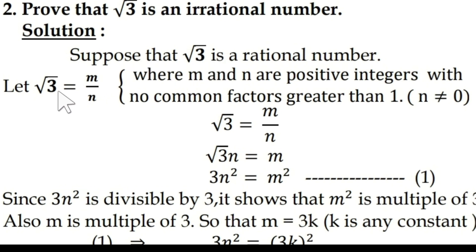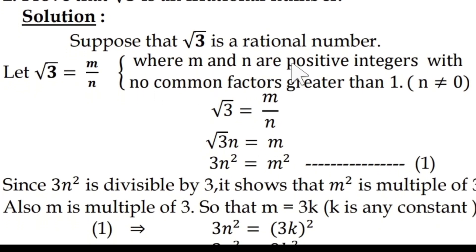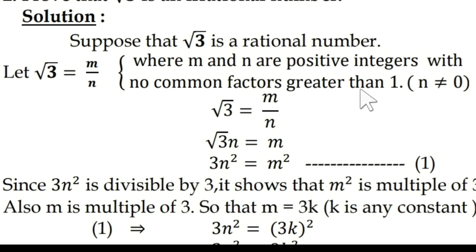So root 3 is a rational number, so it can be expressed in the form p by q. Here I have used m and n instead of p and q. So m and n are positive integers with no common factors greater than 1 — this fraction is in simplified form, with only common factor 1. So root 3 equals m by n.